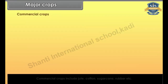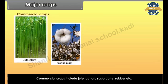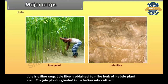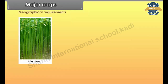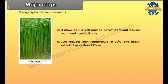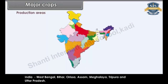Commercial crops include jute, cotton, sugarcane, rubber, etc. Jute is a fiber crop; jute fiber is obtained from the bark of the jute plant stem. The jute plant originated in the Indian subcontinent. It grows best in well-drained sandy loam and requires a warm and humid climate. Jute requires a high temperature of 30 degrees Celsius and heavy rainfall of more than 150 cm. Production areas in India include West Bengal, Bihar, Orissa, Assam, Meghalaya, Tripura and Uttar Pradesh.